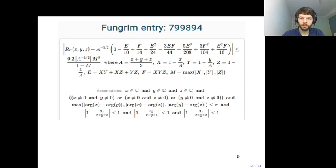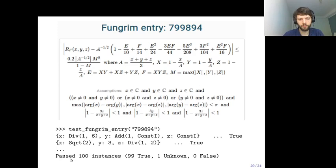Here's a more complex example from the database. It's a formula giving error bounds for an approximation of an elliptic integral. You have three parameters and a bit more complex calculations, and there are some more complex assumptions for the variables. We can test this, and it passes nicely.